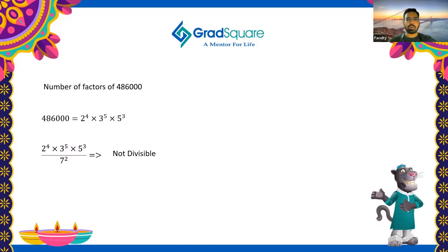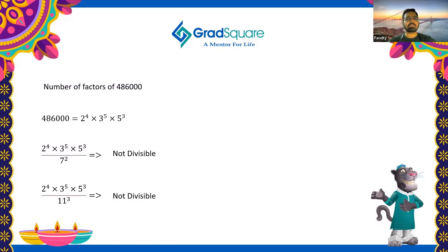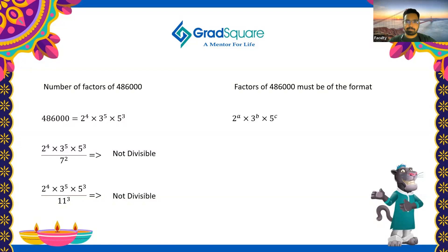Similarly, dividing by 11³ will not work since 11 is not in the numerator to cancel. This leads to an important understanding: any factor of 486,000 must be of the format 2^a × 3^b × 5^c, where a, b, and c take various values.